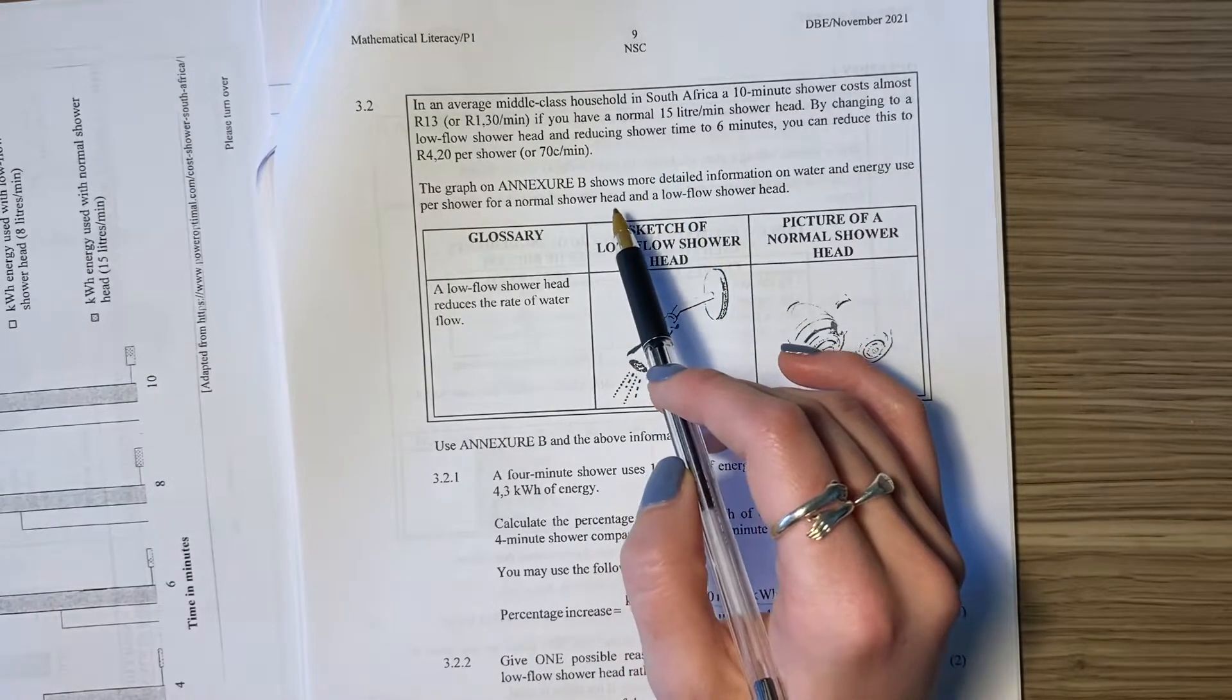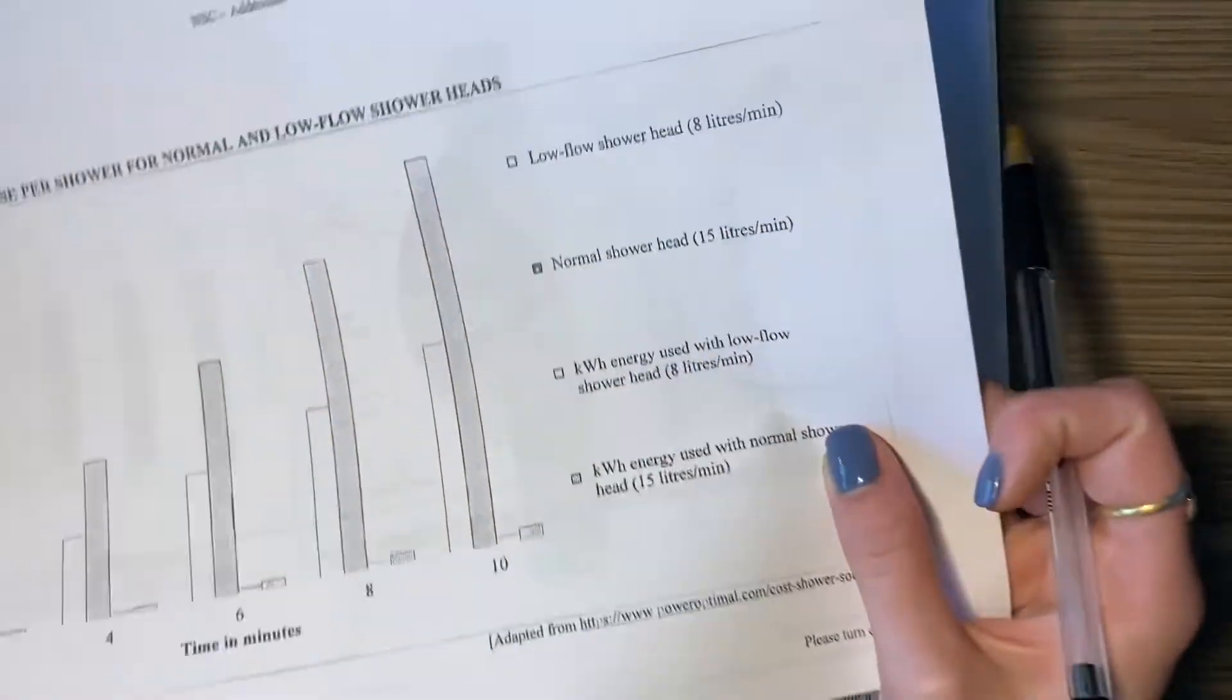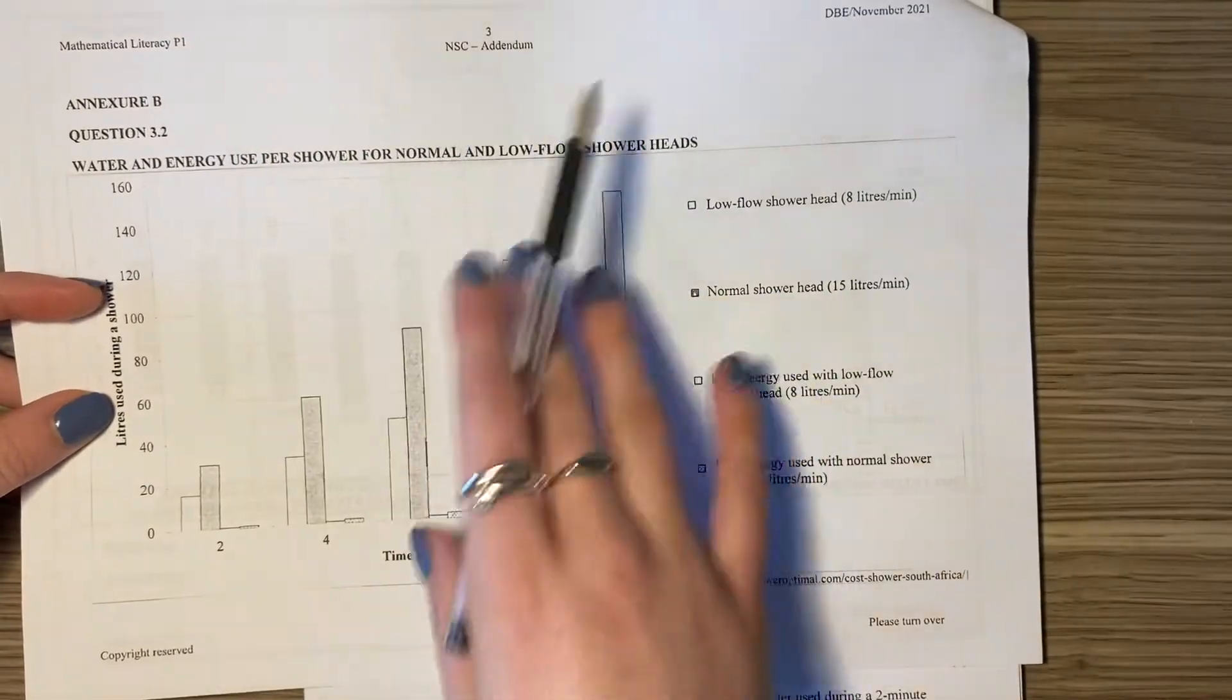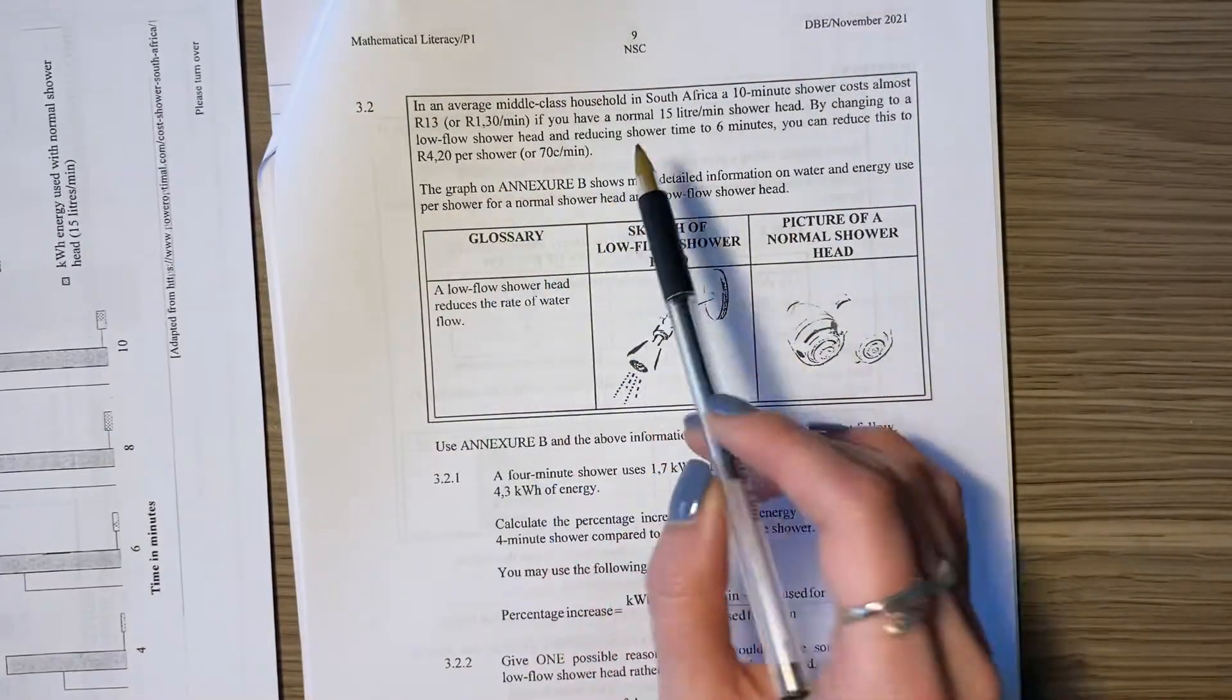The graph on Annexure B—and remember whenever they say that, go and look up your Annexure, there it is there. Yours will be printed better, my printer is still being a bit sketchy. So look at that.